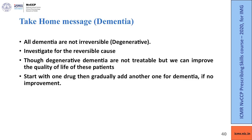The carry-home message for dementia: not all dementias are irreversible or degenerative — reversible causes must be investigated and if present, treated. For degenerative dementia, start with one drug and gradually add another if there is no improvement. Ideally these patients should be treated by experts with better exposure to the drugs and handling of these patients.